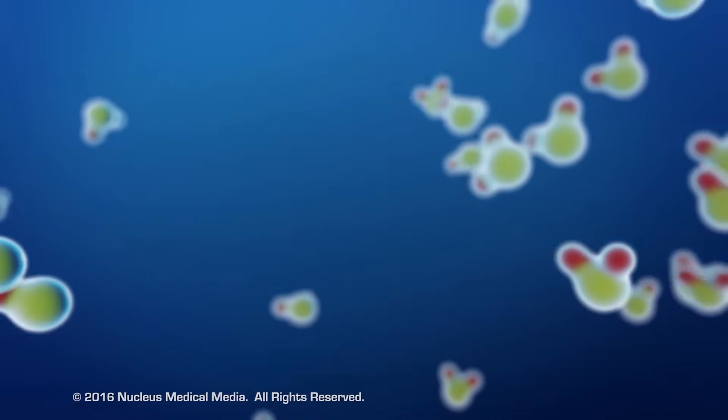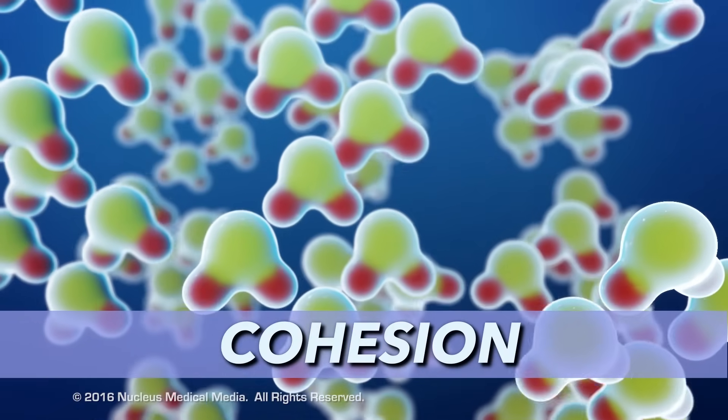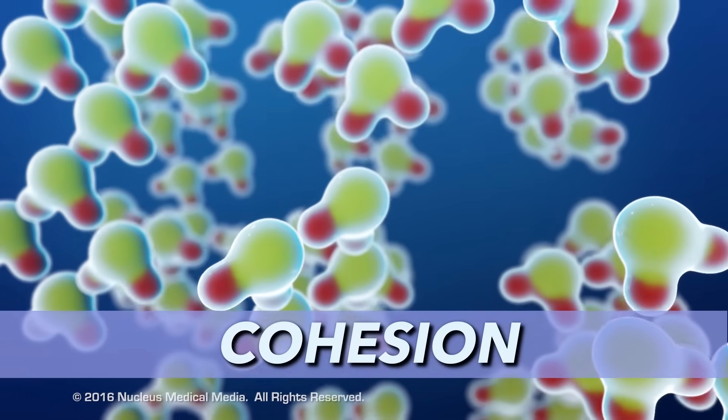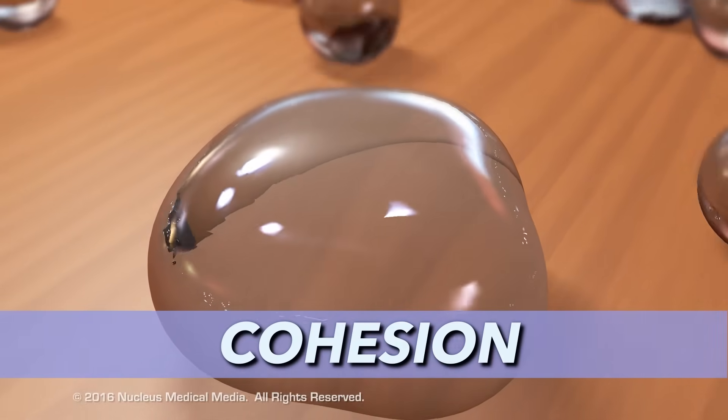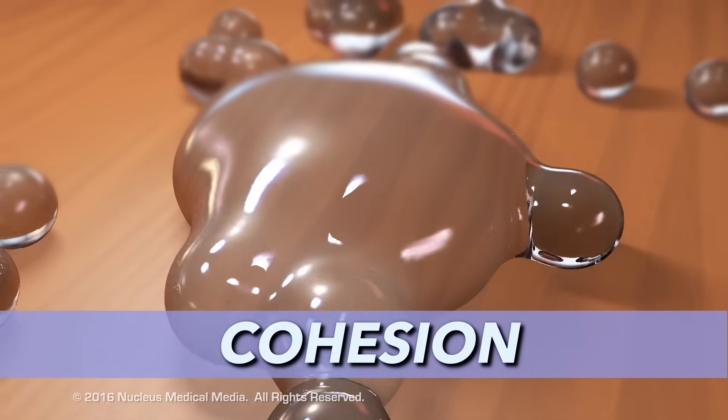An example of cohesion is when opposite poles of water molecules are attracted to each other but not to the surrounding air. This creates an inward force allowing water to bead up and form water droplets.